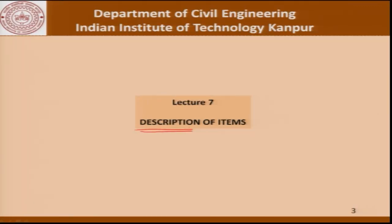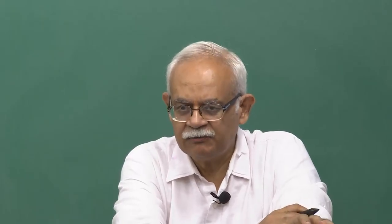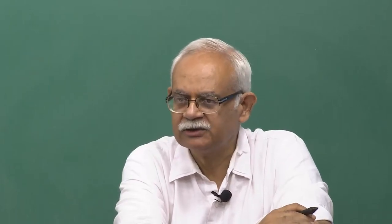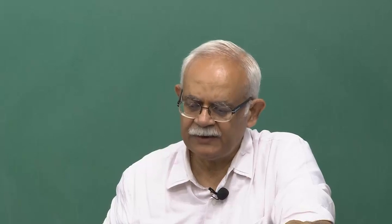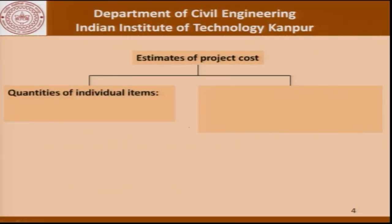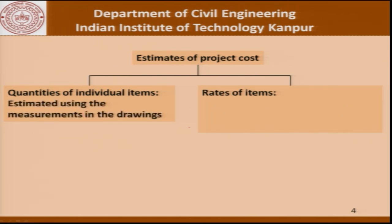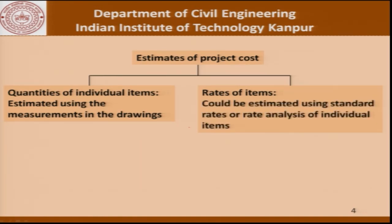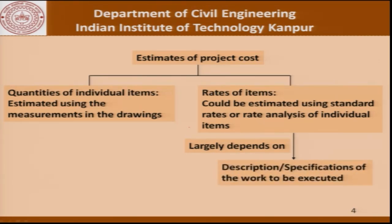When we describe an item, we actually tell the contractor or a bidder the conditions under which the earthwork is to be carried out. Coming back to these estimates, there is the quantity of individual items — that is what we have done last time. There are also the rates of these items; the quantities are estimated using the measurements as given in the drawing. As far as rates are concerned, they could be estimated using standard rates or the rate analysis of individual items, which largely depends on the description or specifications of the work to be carried out.